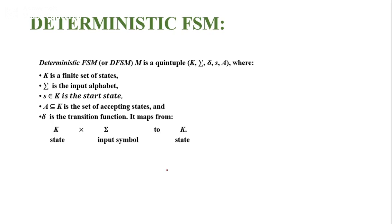Next we'll see the deterministic finite state machine definition. It is a finite state machine termed as M, and it is a quintuple: M = (K, Σ, δ, s, A), where K is a finite set of states, Σ is the input alphabet, s is the start state which belongs to K, A is a subset of K which is the set of accepting states, and δ is the transition function representing all transitions between states in the format K × Σ → K.